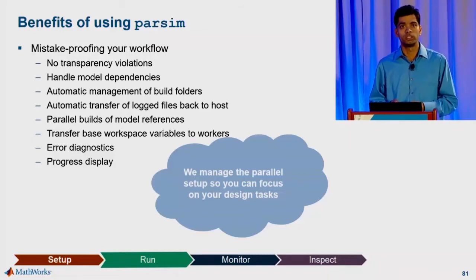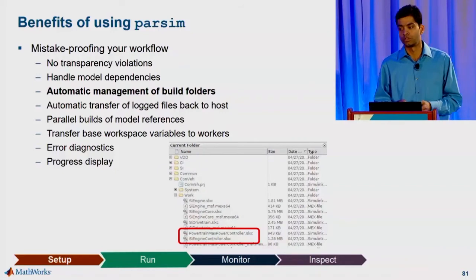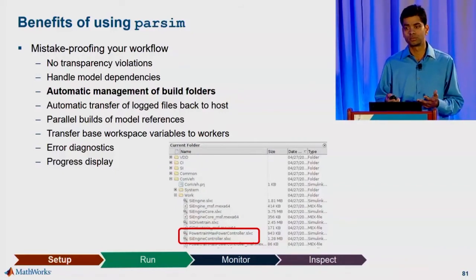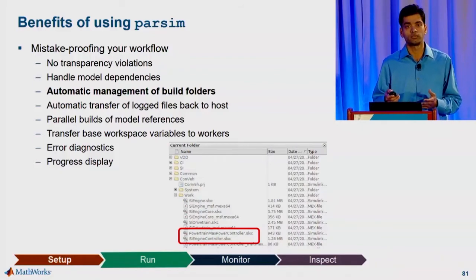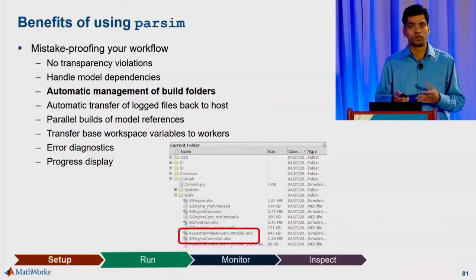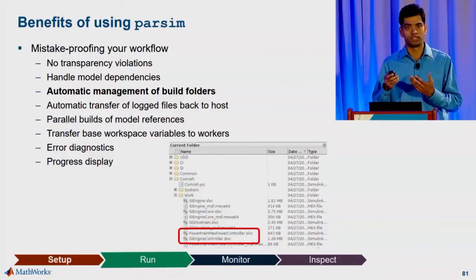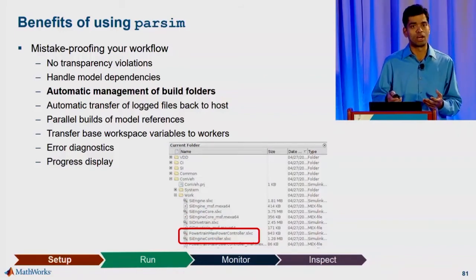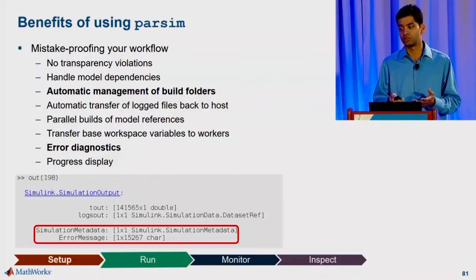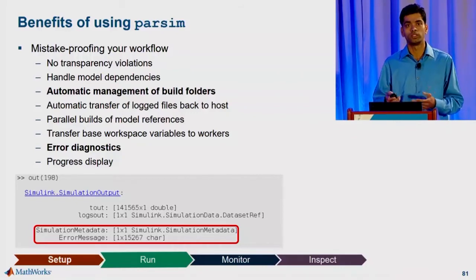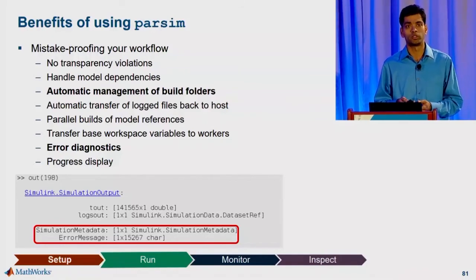I want to dive into the details of a few items, starting with automatic management of build folders. When you have a compiled model, simulation cache files get generated. parsim picks these files up and sends them to the parallel workers, and it can potentially save you hours of compile time. We also have better error diagnostics, so you have access to the metadata and the error message right on the simulation output object, so you can start looking at what issues there were with that particular simulation.